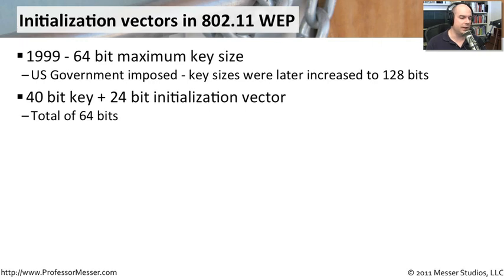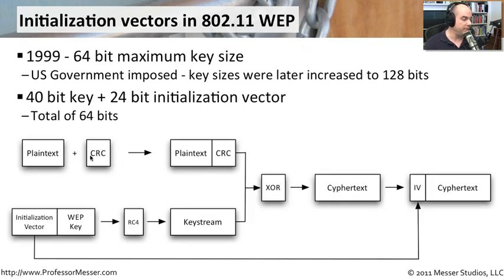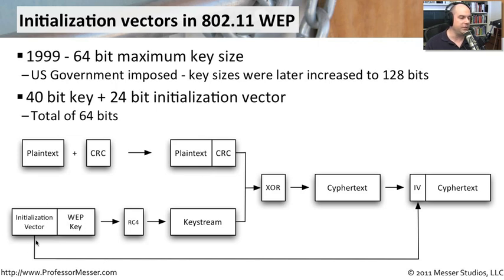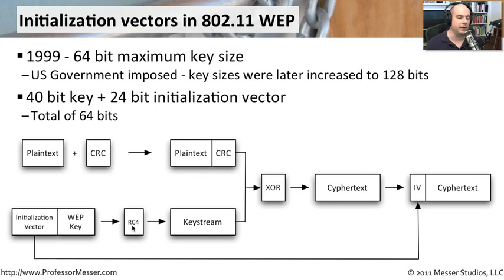Let's look at exactly how this encryption process occurred. You have some plaintext — what you'd like to send to the other side. You take that data and create a cyclical redundancy check (CRC) for it, a way to verify on the other side that the data wasn't changed in transit. Those two things together are what you encrypt and send. You also have the WEP key and the initialization vector — note the boxes are not to scale. Those two things are put together and a cipher called RC4 is used on them to encrypt the data, creating a key stream. RC4 can also be used to decrypt the data, which is important.